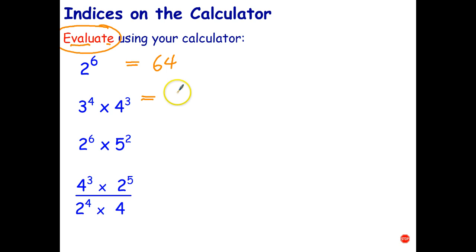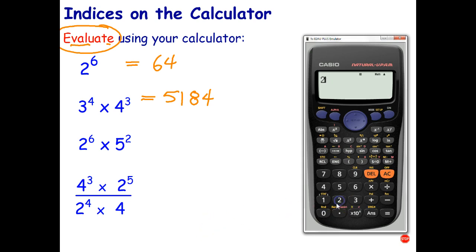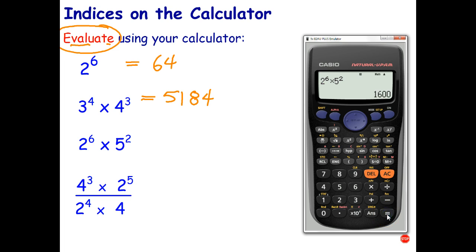Have a go at the remaining two questions. For the one on the bottom, if your calculator has a fraction button use that. Stop the video, try them, then restart and check your answer. For the next one: 2 to the power of 6, arrow across — the most common mistake is forgetting to arrow the cursor back down to the main line — multiply by 5 squared, and because this calculator has a special squared button I can save a couple of key presses. That evaluates to 1600.